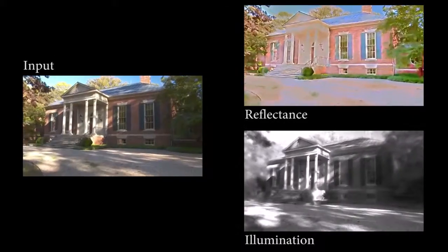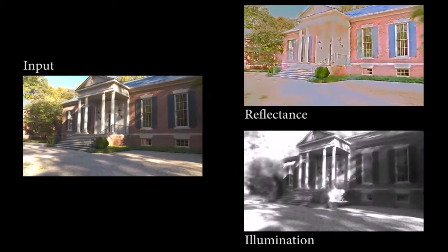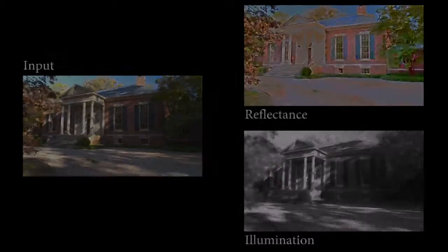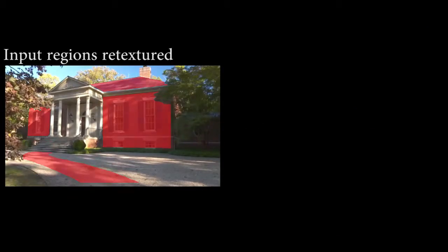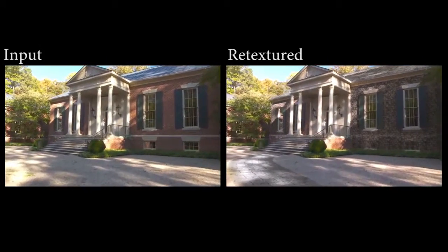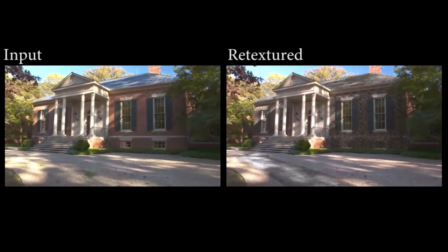Still, our approach can handle complex videos. This scene has complex illumination coming through the trees and high reflectance detail on the building masonry. However, we managed to create a convincing retexturing of the roof, walls, and driveway. Any flickering would be immediately obvious in this camera pan, but our approach is temporarily consistent.